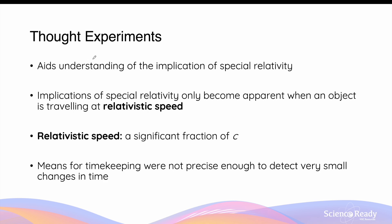Thought experiments aid the understanding of the implications of special relativity. The implications of special relativity only become apparent when an object or frame of reference is travelling at a relativistic speed — a speed that is at a significant fraction of the speed of light. Since it is very difficult for actual experiments to achieve such a speed, scientists often use thought experiments to help people understand and predict the effects of special relativity.